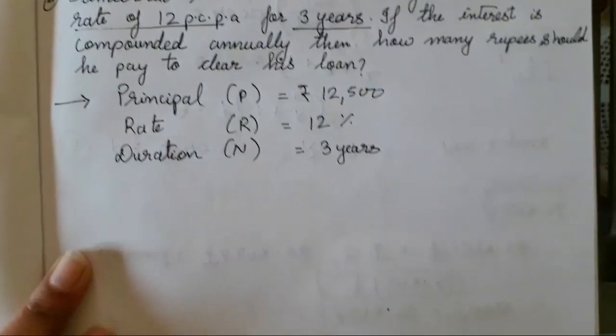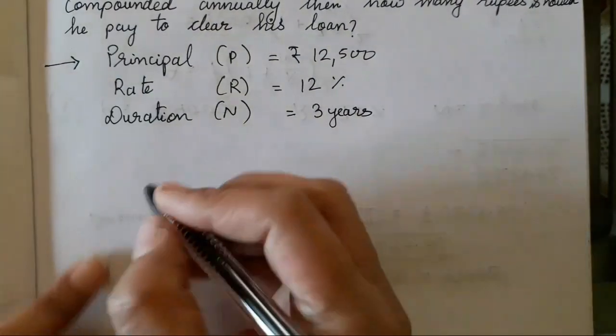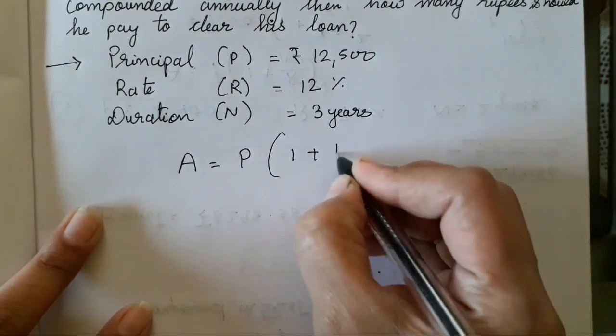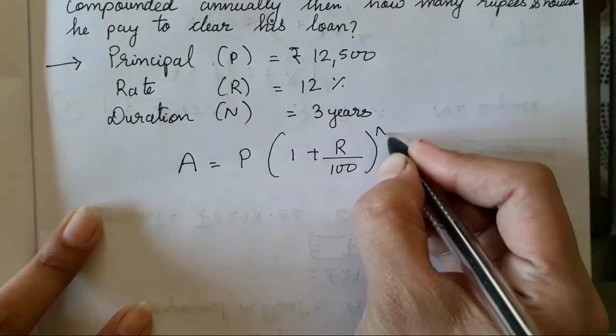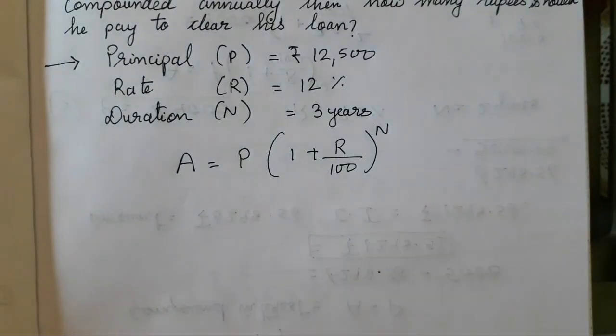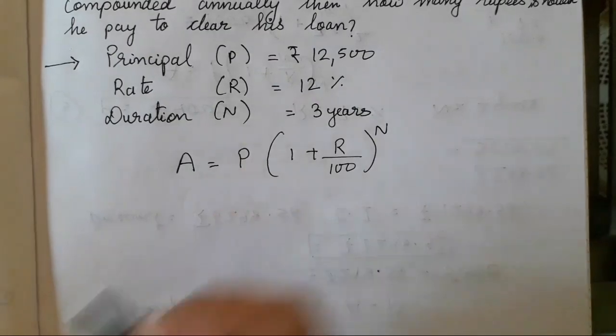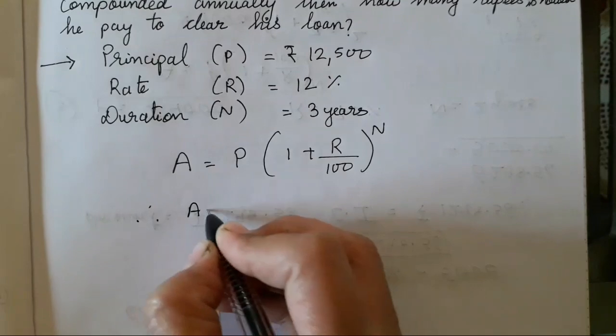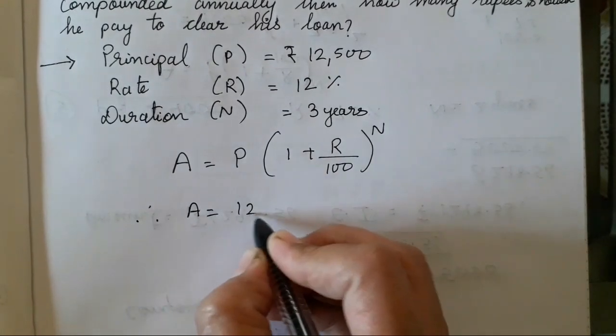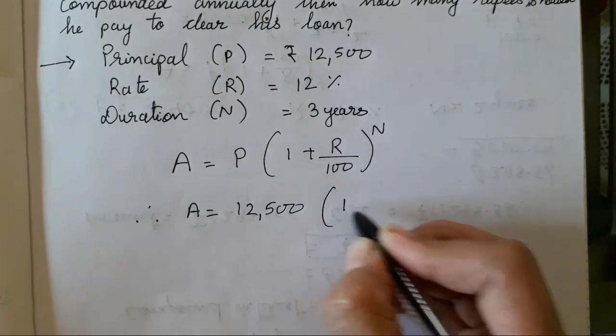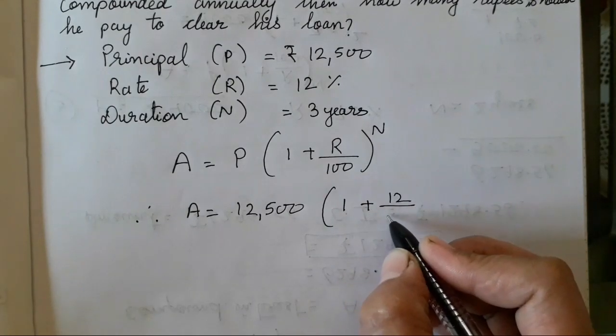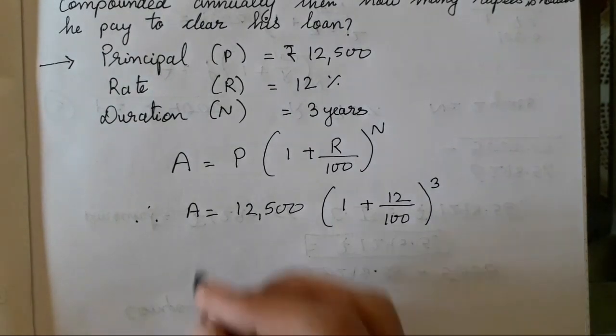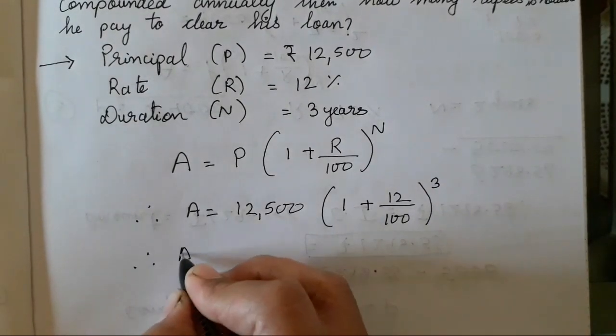After writing what has been given, we have to put the formula for the amount, that is A = P(1 + R/100)^N. This is the standard formula for finding the amount in order to get compound interest. Therefore, A is equal to P was 12,500, 1 plus R is 12 upon 100, and N is supposed to be 3.